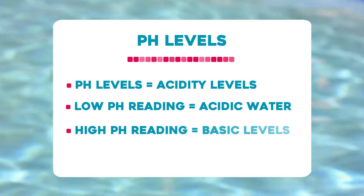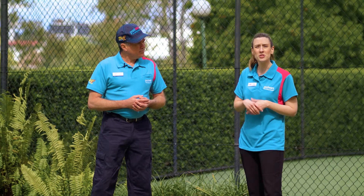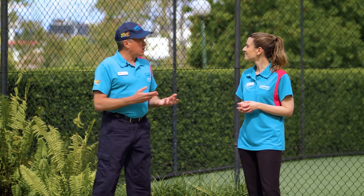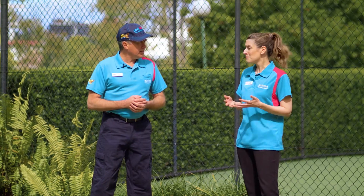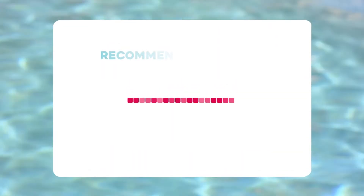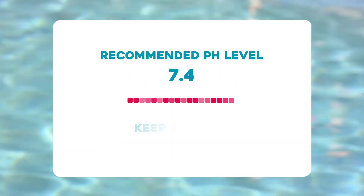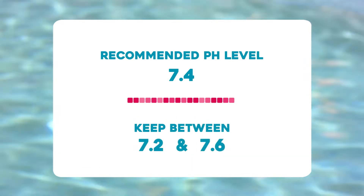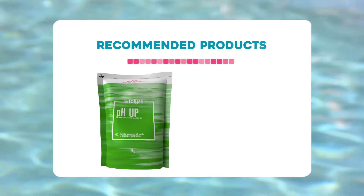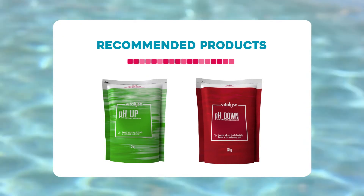A high pH reading is basic and that can cause scaling on your pool surface and your plumbing. The recommended pH is surprisingly the same as the human eye, which is pH 7.4, so I would recommend keeping your pool levels between pH 7.2 and pH 7.6. Products I would use to do this are pH Vitalise Up and Vitalise pH Down.